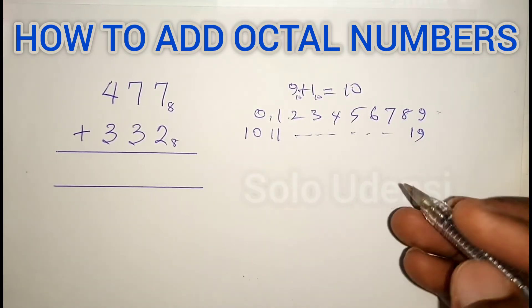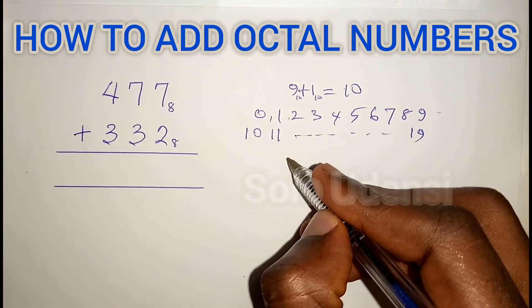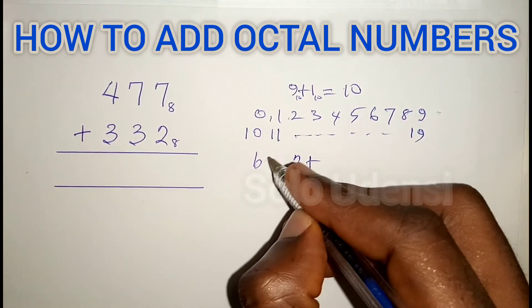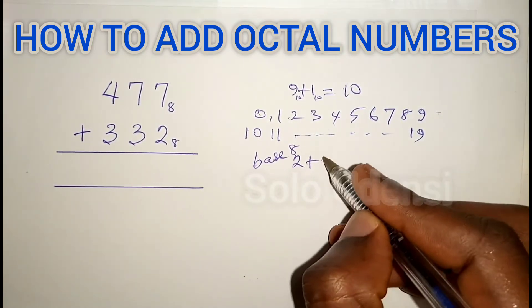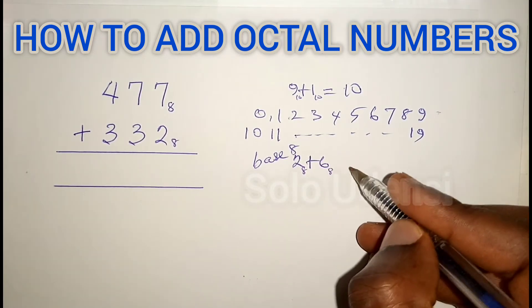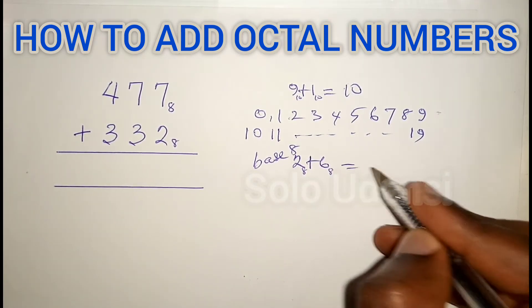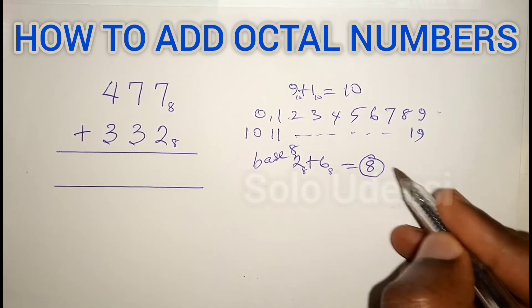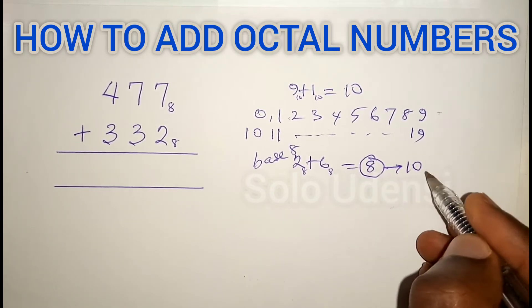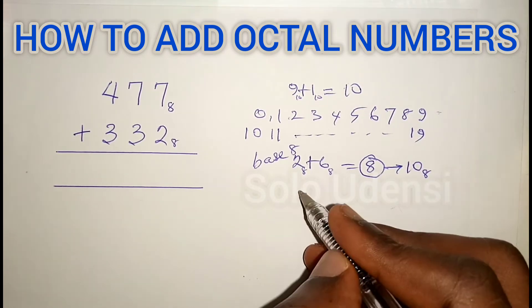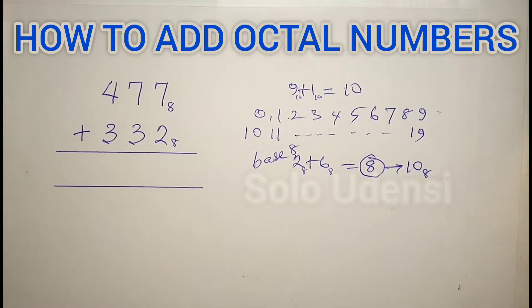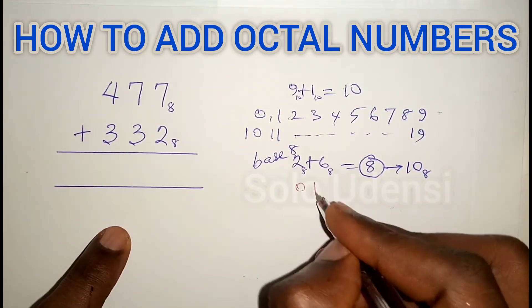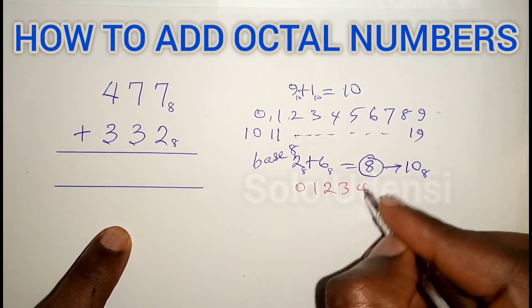In base 8, what it means is that if we have for instance 2 plus 6 in base 8, it will give us 8. Because there is no 8 in base 8, we call this 10 in base 8, because the numbers in base 8 are 0, 1, 2, 3, 4, 5, 6, 7.